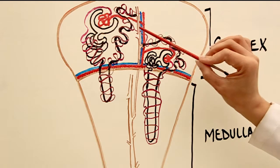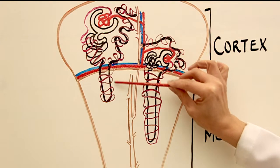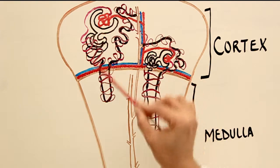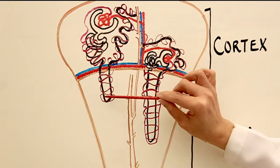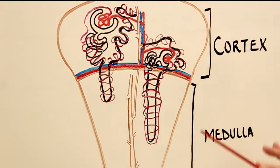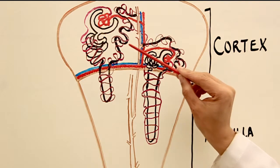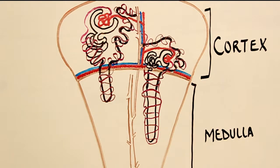Each nephron is closely associated with two capillary beds. One is the glomerulus and the other is the peritubular capillaries — 'peri' meaning all around, like a wire mesh. These two beds perform completely different functions from each other. Also important to note: all these capillaries are fenestrated type — they have large pores — whether in the glomerulus or around the tubules.